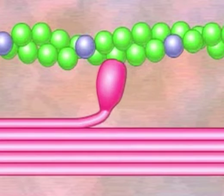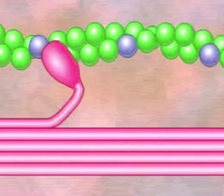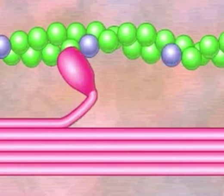The myosin, in effect, walks along the actin filament, moving the actin filament more each time.